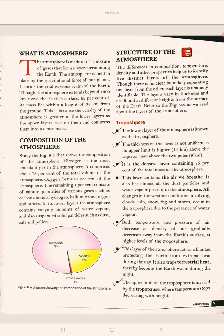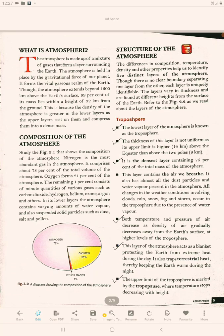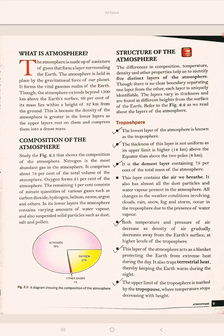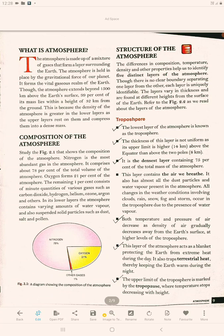Now, composition of the atmosphere — which gas is present in what quantity. Referring to figure 2.1, nitrogen is the most abundant gas, comprising about 78% of the total volume of the atmosphere. Oxygen forms 21% of the atmosphere. The remaining 1% consists of minute quantities of various other gases such as carbon dioxide, hydrogen, helium, ozone, argon, and others. The lower layers also contain different quantities of water vapour and suspended solid particles.